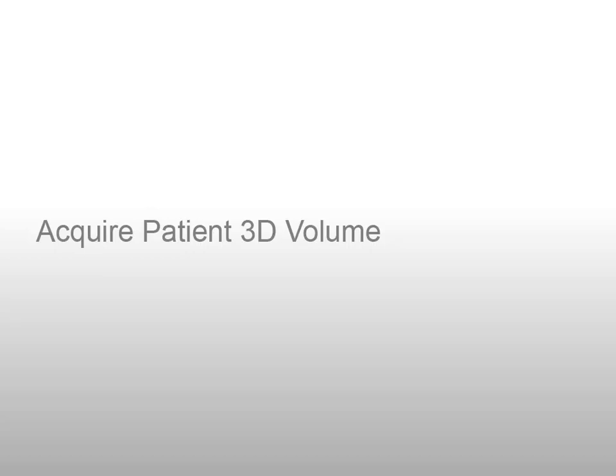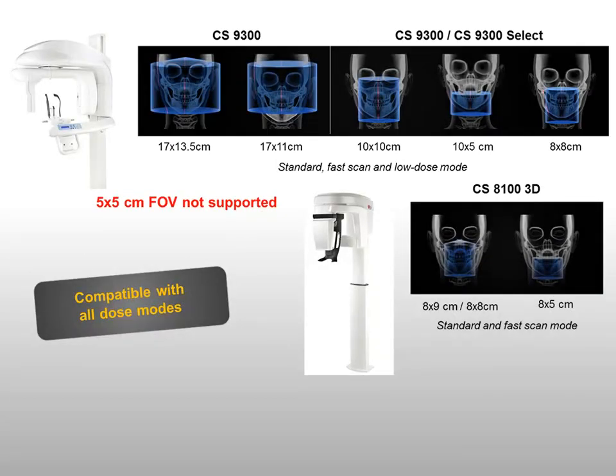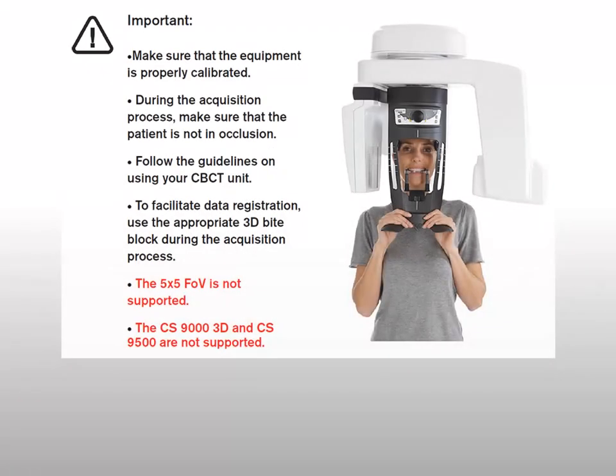Acquire a 3D volume of the region of interest using a CS8100 3D or CS9300 units. These CareStream Dental CBCT units and fields of view are specifically adapted for this use. Be sure to use the appropriate 3D bite block during the X-ray acquisition process. Then perform an evaluation of the region of interest and take the necessary measurements.